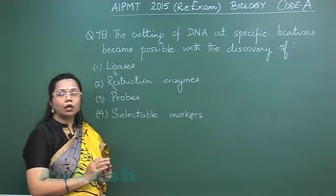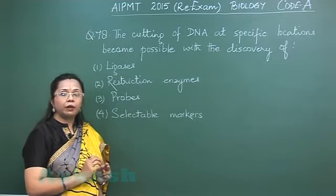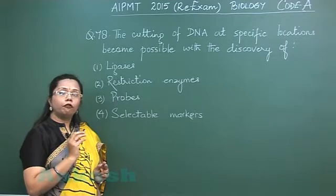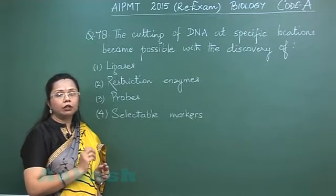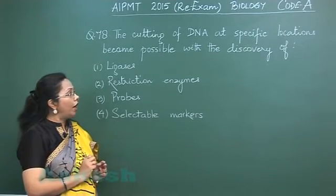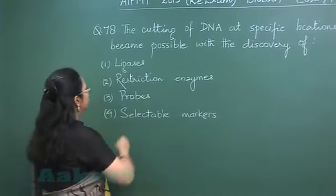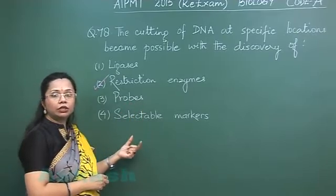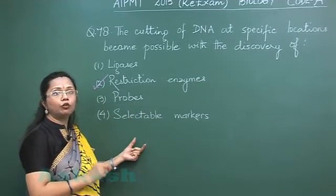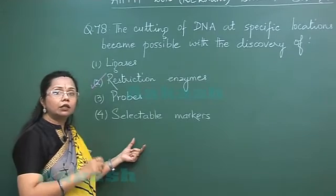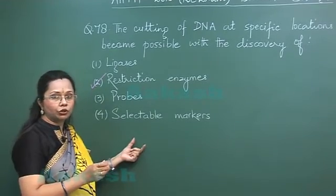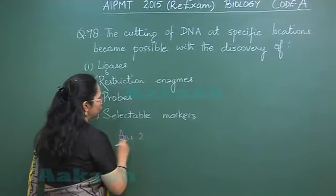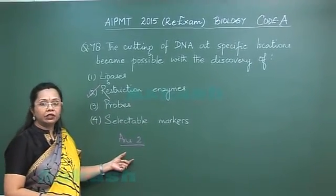They are called restriction enzymes because they are the defense mechanism of bacteria to restrict the DNA of viruses from integrating with the bacterial genome. The answer is option 2, restriction enzymes. These restriction enzymes are specifically found in bacteria only, but they can cut DNA from any source. Let's move to the next question, 79.